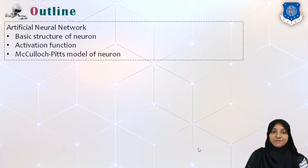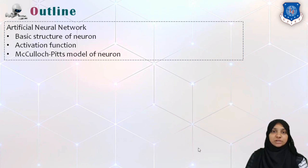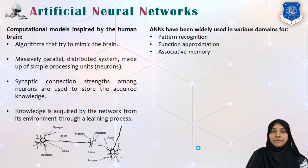Hi, in today's video we are going to study about artificial neural network. We will start with the basic structure of neuron. We will see different kinds of activation functions, and finally the basic or scratch model of a neuron with the McCulloch-Pitts model. So let us start with the definition of artificial neural network.